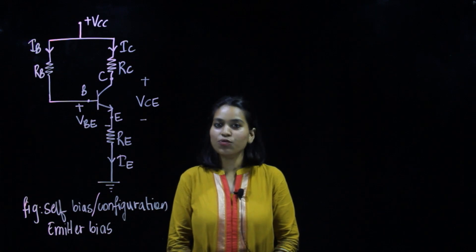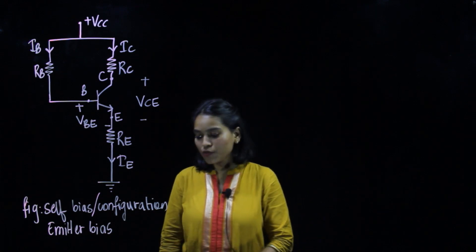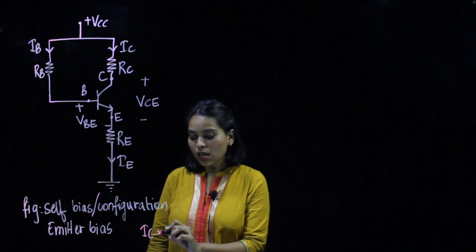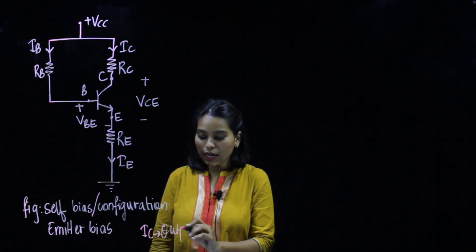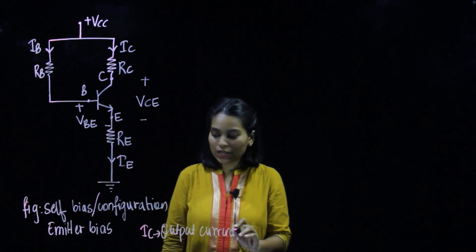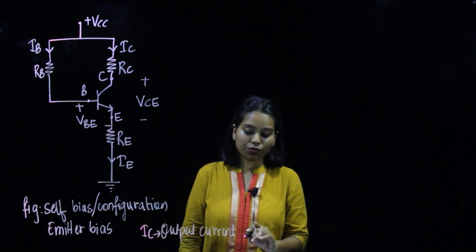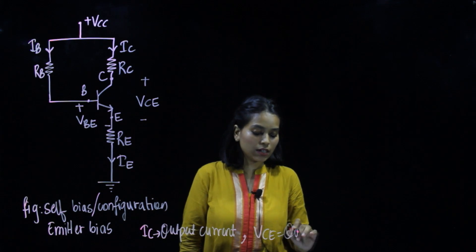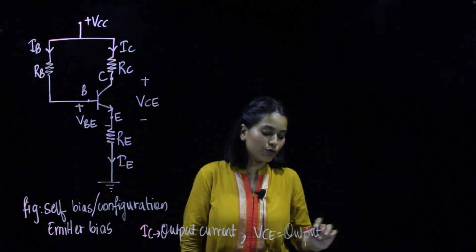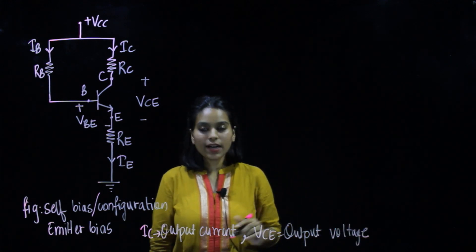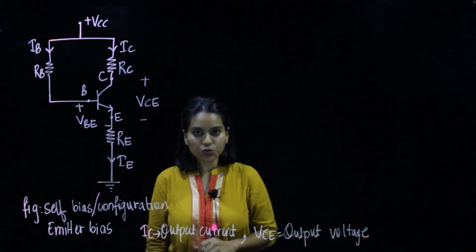We have to find out two parameters: the first is IC, which is the output current, and the second is VCE, which is the output voltage. We will be finding out these two parameters.